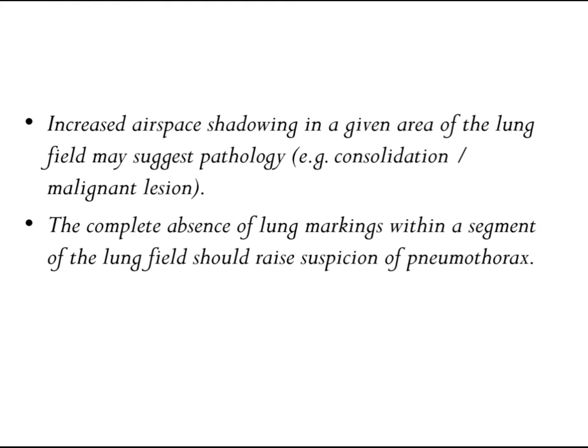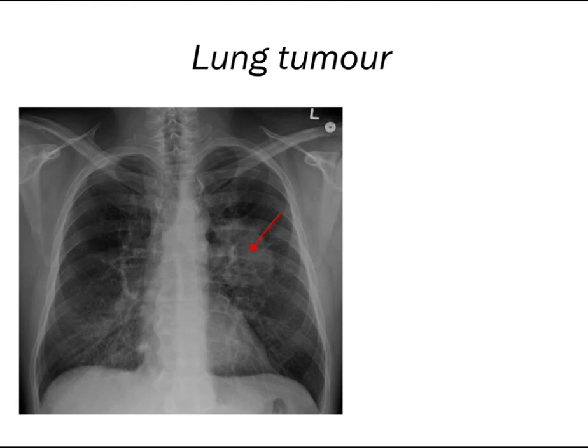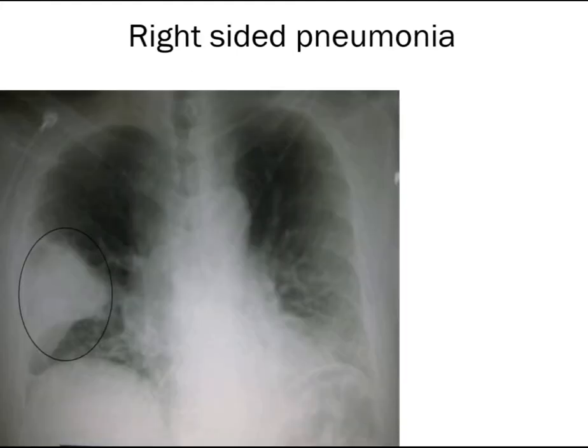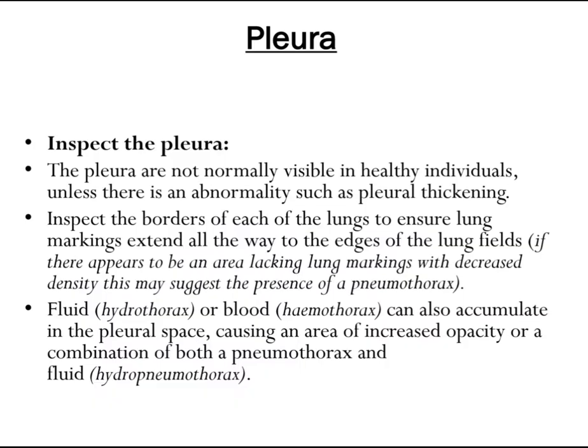Increased airspace shadowing in a given area of the lung field may suggest pathology such as consolidation or a malignant lesion. The complete absence of lung markings within a segment should raise suspicion of pneumothorax. Inspect the pleura — the pleura are not normally visible in healthy individuals unless there is an abnormality such as pleural thickening. If there appears to be an area lacking lung markings with decreased density, this may suggest pneumothorax. Fluid (hydrothorax) or blood (hemothorax) can also accumulate in the pleural space causing increased opacity, or a combination of both (hydropneumothorax).